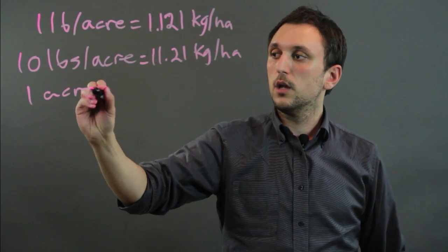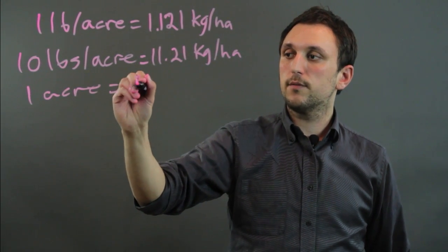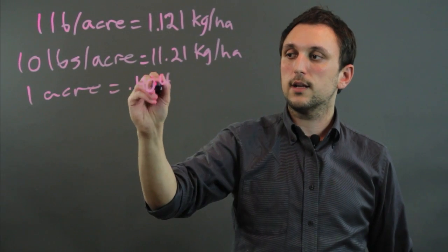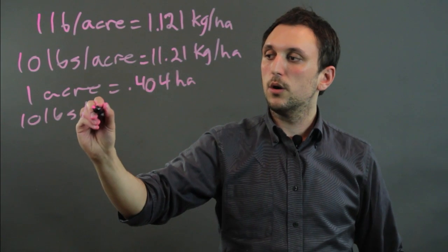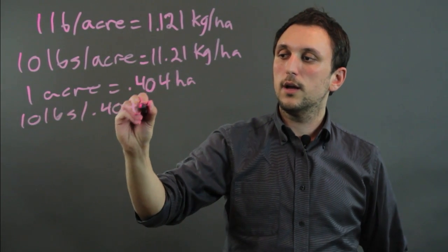So one acre equals 0.404 hectares. And that means we're saying 10 pounds per 0.404 hectares.